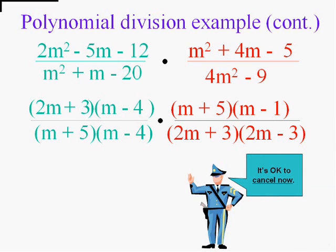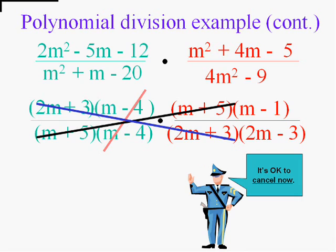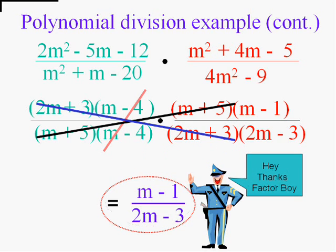Now the fun part. It's okay to cancel. I'll cancel the m minus fours. There's some m plus fives. Anybody else? The two m plus threes. And who's left? m minus one over two m minus three. And there it is.